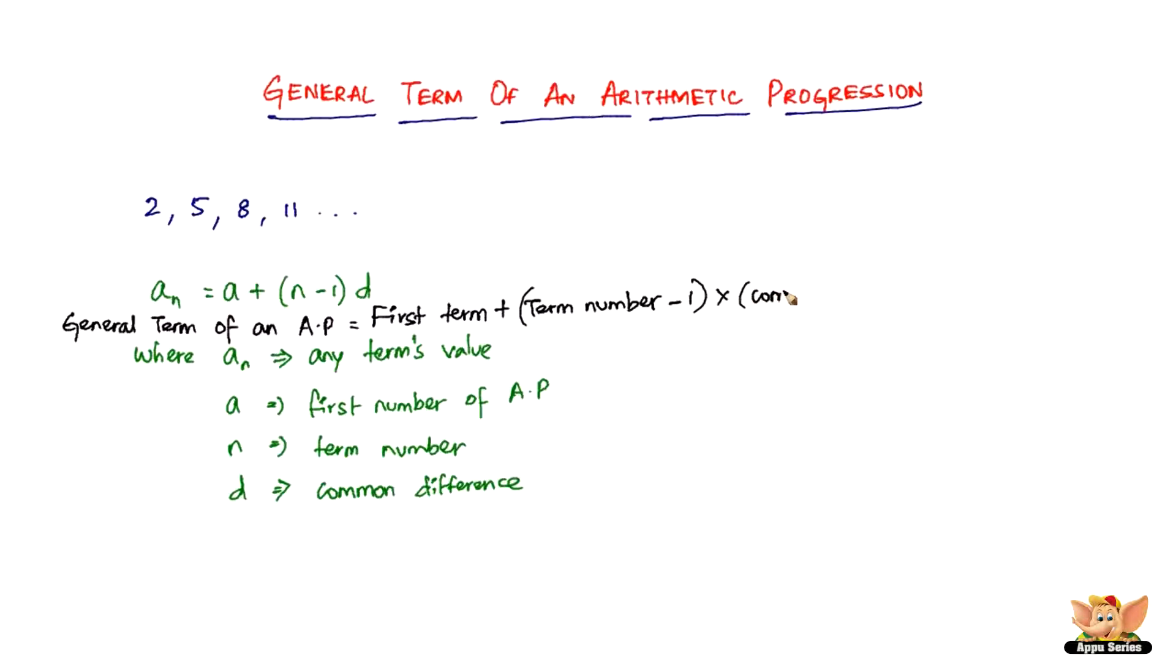Whichever term you're looking for—the term number minus one times the common difference. So this is what is going to give you the value of any term of an arithmetic progression. I've just written the same formula in terms of words.